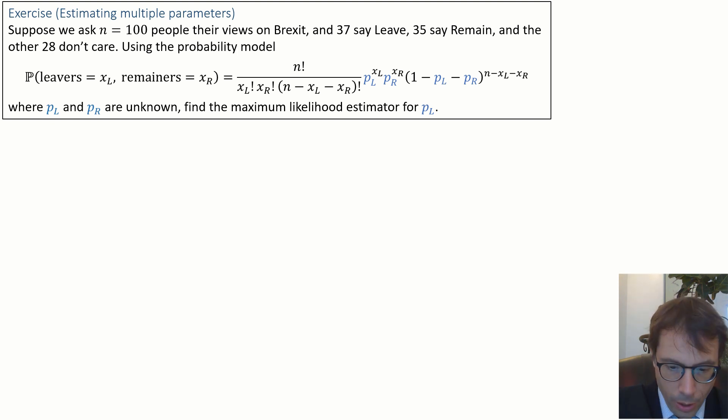The crucial thing about this one, about any problem with multiple parameters, is that you need to include all the parameters in the model when you do the maximization. Even though we're just interested in one of them, we need to maximize over all of the unknown parameters, and then we just throw away the ones we're not interested in. So let's go ahead and do the maximization.